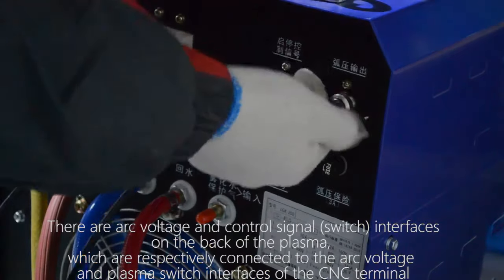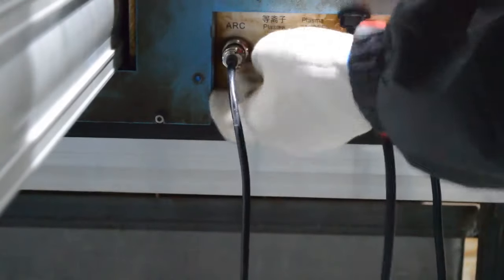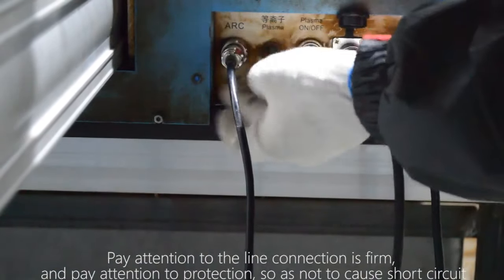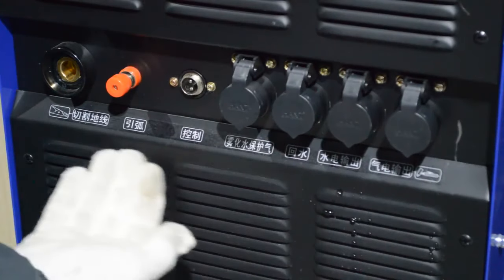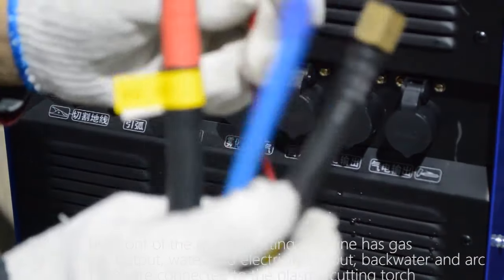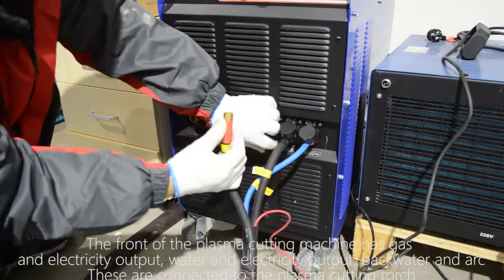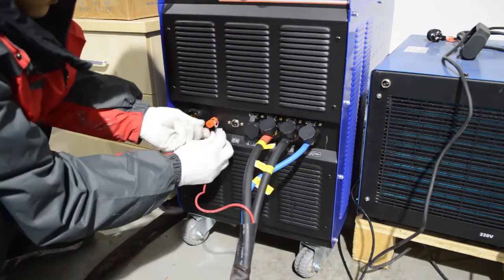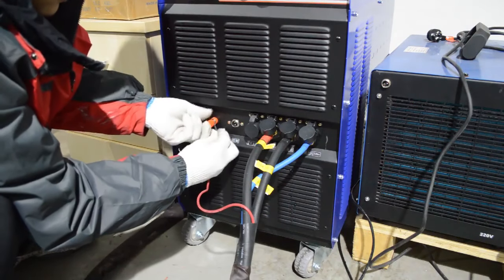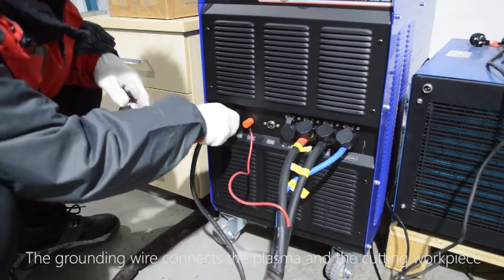Compressed air is fed into the plasma inlet after passing through the pressure reducing valve. There are arc voltage and control signal interfaces on the back of the plasma which are respectively connected to the arc voltage and plasma switch interfaces of the CNC terminal. Pay attention to the line connection is firm and pay attention to protection so as not to cause short circuit. The front of the plasma cutting machine has gas and electricity output, water and electricity output, backwater and arc. These are connected to the plasma cutting torch. The grounding wire connects the plasma and the cutting work piece.